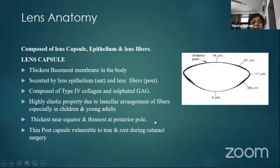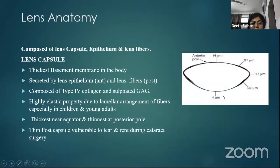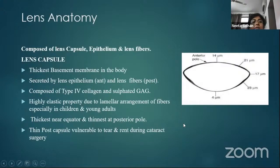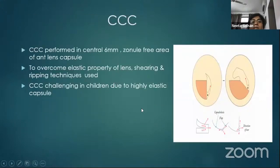The lens is composed of the lens capsule, epithelium, and lens fibers. The unique thing about the lens capsule is that it is the thickest basement membrane in the body. It is thickest near the equator where the ciliary zonules attach, and thinnest at the posterior pole. This thin nature of the posterior pole makes it vulnerable to tear and rent formation at the time of cataract surgery. The capsule also possesses a highly elastic property, especially evident in children and young adults, which should be kept in mind while performing continuous curvilinear capsulorrhexis or any other capsulotomy procedures.